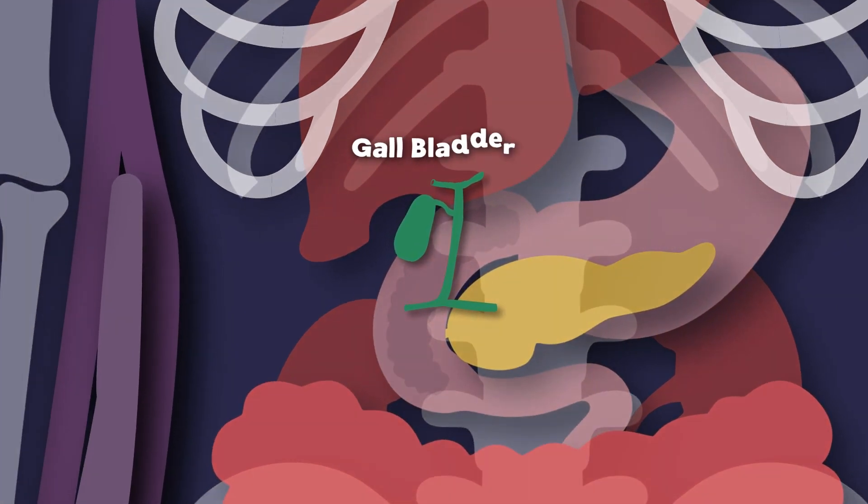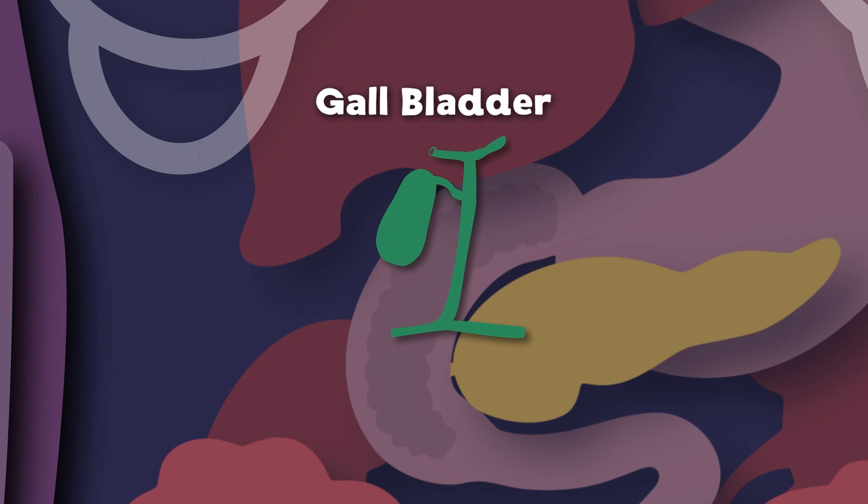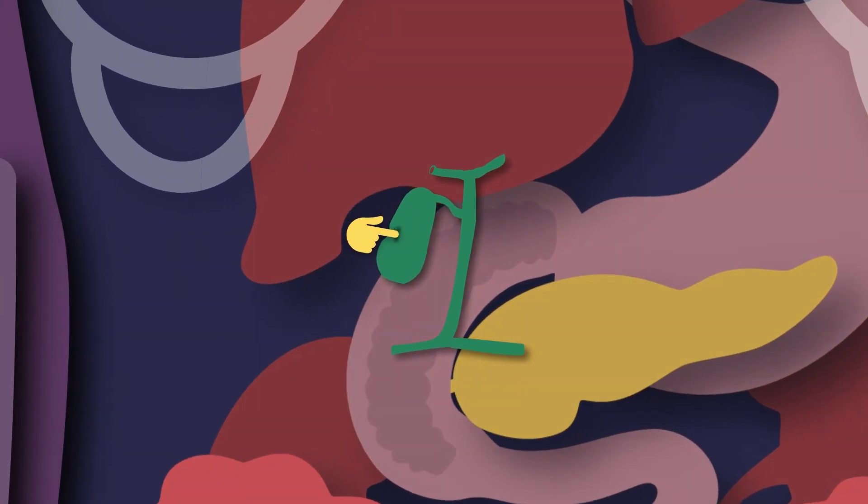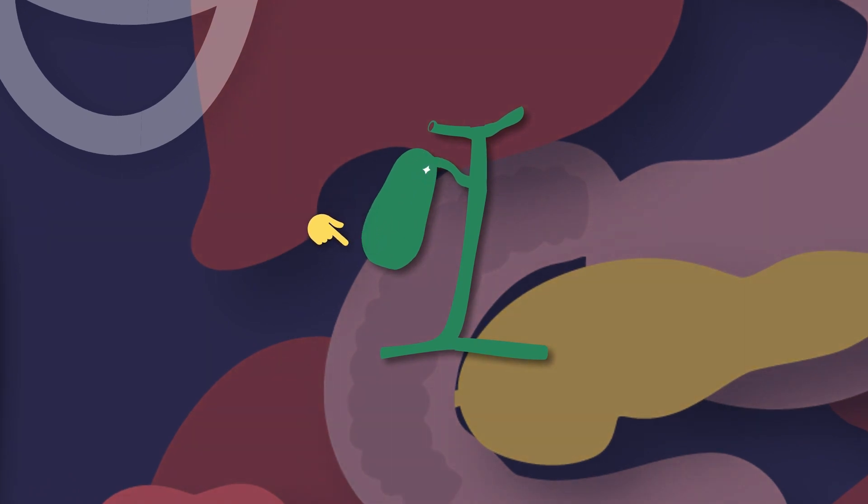I am your gallbladder, I am a sac-shaped organ you see, I am a gallbladder, your liver stores its bile in me. My surface is smooth to the touch, I am green in color now you know that much,